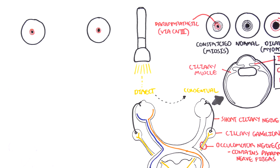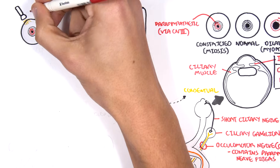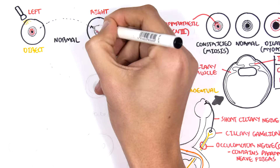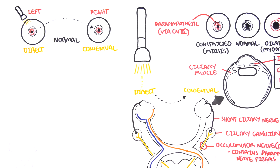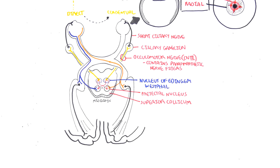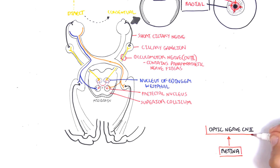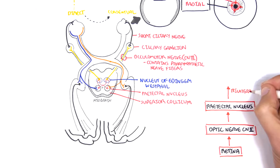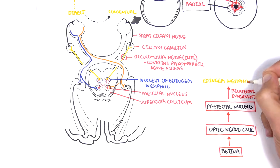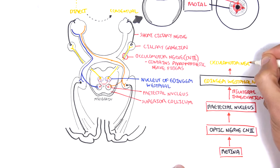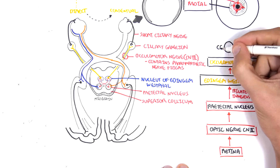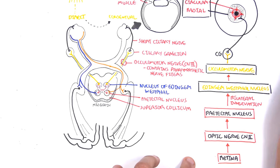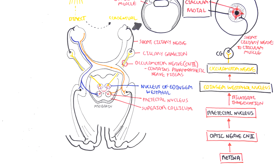Just to recap: we have the left eyeball and the right eyeball. Shining a light to the left eye gives a direct response with pupil constriction, and then a consensual response on the right eye. This is when the light reflex pathway is normal with no lesions. From the retina, the optic nerve brings information to the pre-tectal nucleus in the midbrain. Then bilateral innervation occurs — crossing over to the Edinger-Westphal nucleus on both sides. The Edinger-Westphal nucleus stimulates the oculomotor nerve, which travels to the ciliary ganglion, where it synapses with the short ciliary nerve to stimulate the circular muscles of the iris, resulting in pupillary constriction.